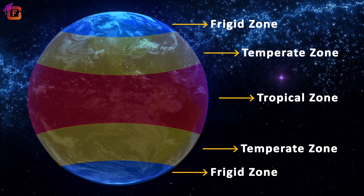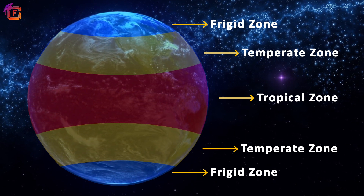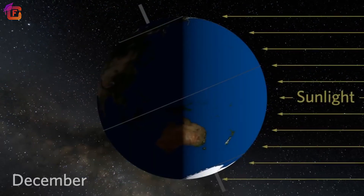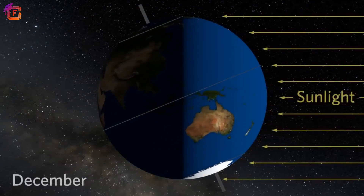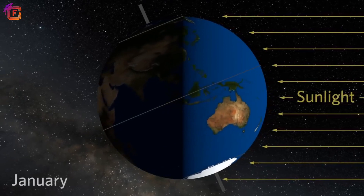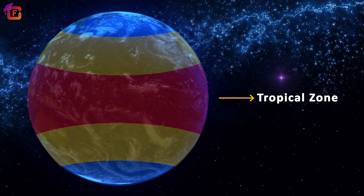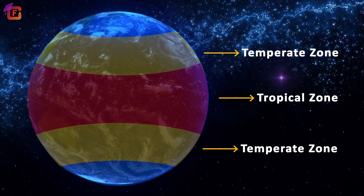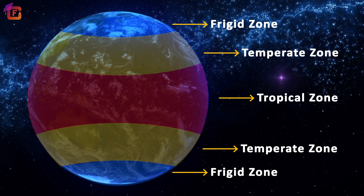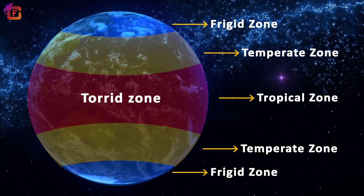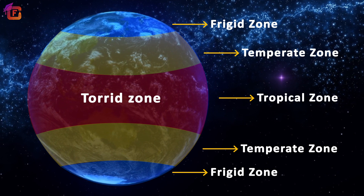Heat zones of the earth are divided on the basis of the amount of sunlight received. On the basis of the amount of heat received, there are three heat zones of the earth: the tropical zone, the temperate zone, and the frigid zone. The tropical zone is also known as the torrid zone. The word torrid means hot.